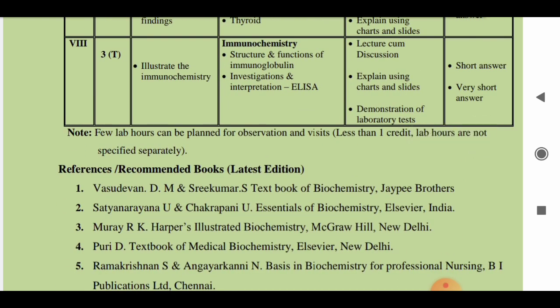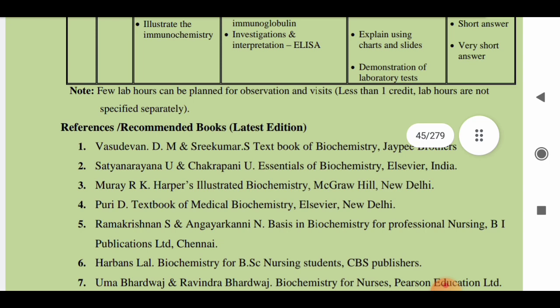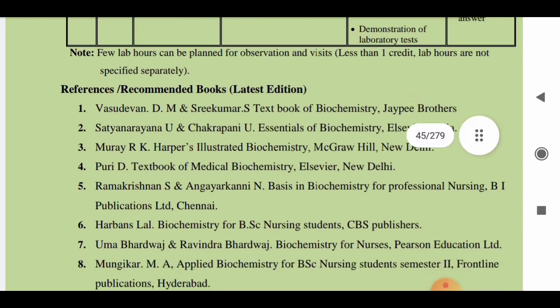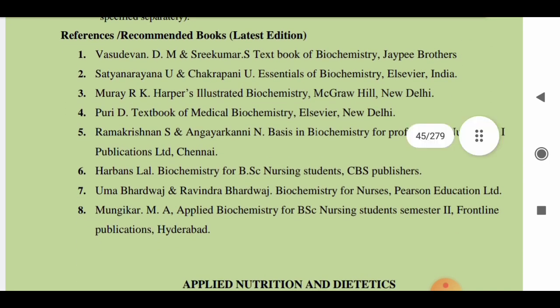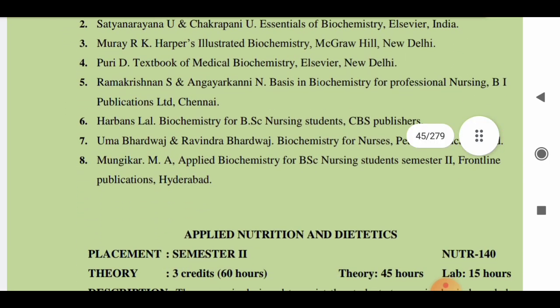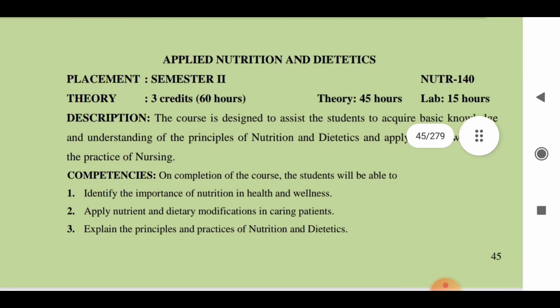Recommended textbooks for Applied Biochemistry include Vasudevan, Satanarayana, Murray, Puri, D. Ramakrishnan, Harbhajan Lal, and others. That covers the Biochemistry subject — 40 hours of theory in total.